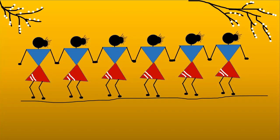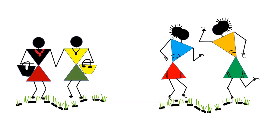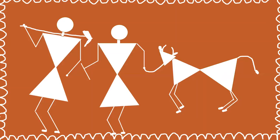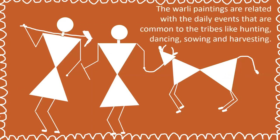In this Varli painting, women are dancing in the nature. See how cool they look. Women are enjoying their daily routine. In the next Varli painting, farmer's life is depicted. The Varli paintings are related with the daily events that are common to the tribes, like hunting, dancing, sewing and harvesting. You can make many such paintings which you like.